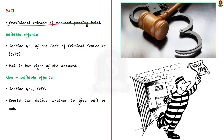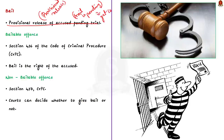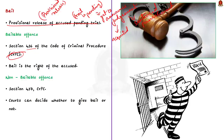Bail denotes the provisional release of an accused for whom trial is pending. The accused is not permanently released, and since the trial is pending, the court has yet to announce judgment. Sections 436 and 437 of the Code of Criminal Procedure (CrPC) deal with bail provisions. Section 436 deals with bail in bailable offenses, where bail is the right of the accused. This casts a mandatory duty on police and courts to release the accused if the offense is bailable.